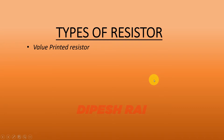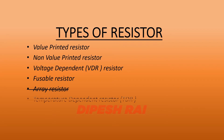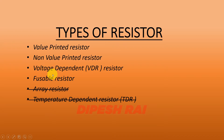Now I'm going to discuss about the types of resistors. Basically there are different types of resistors. The first one is the value printed resistor. The second one is the non-value printed resistor. Another one is the voltage dependent resistor, which is also known as a VDR. And the other is the fusible resistor. In older phones there was also an array resistor, but nowadays that kind is not available in modern PCB boards. So basically there are four types of resistor: value printed, non-value printed, VDR, and fusible resistor.